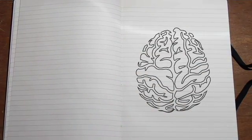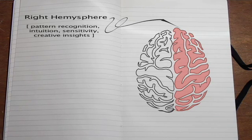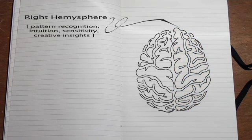The world of thought is roughly divided into two hemispheres. Over there is the right hemisphere of the cerebral cortex. It's mainly responsible for pattern recognition, intuition, sensitivity, and creative insights.